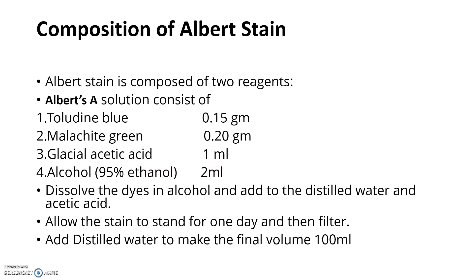Albert stain is composed of two reagents: Albert's A and Albert's B. Albert's A consists of toluidine blue, malachite green, glacial acetic acid, and alcohol. The dyes are dissolved in alcohol, then added to distilled water, and the pH is adjusted with acetic acid. The stain is allowed to stand for one day, then filtered, and distilled water is added to make the final volume 100 ml.